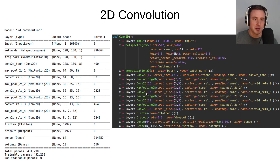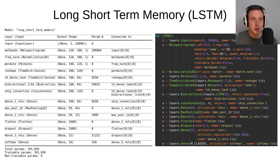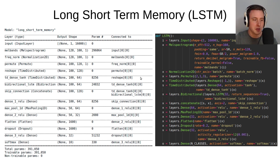That's the standard computer vision approach to audio. Now let's look at the LSTM — my favorite of all these networks, mainly because it's designed specifically to look at features and how they change over time. Again we use permute here to switch dimensions, expecting batch by time by features by channels.